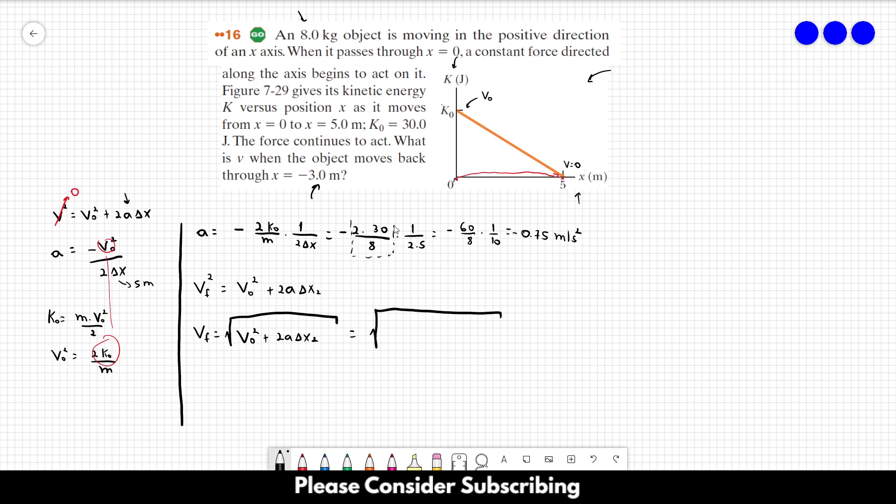Which is 2 times 30 over 8, which is 60 over 8, plus 2 times 0.75 times minus 3.